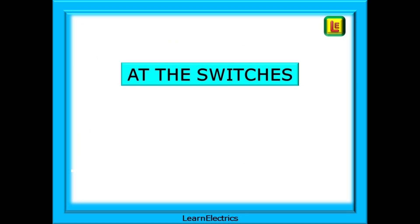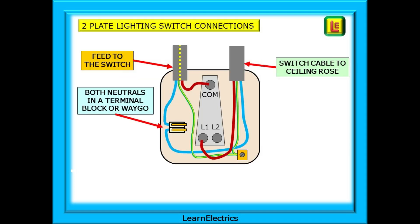Now take a look at what's happening at the switches, because things are different here too. Here are the two-plate lighting switch connections. On the left is the feed cable from the consumer unit into the switch, marked with yellow dots to show that this is the feed cable and is permanently energized — it is always live. On the right is the switch cable going to the ceiling rose. Notice that with two-plate lighting, we bring the neutral into the switch as well, and then take it to the ceiling rose.